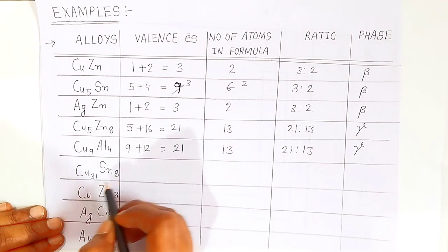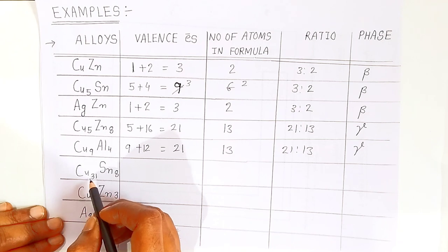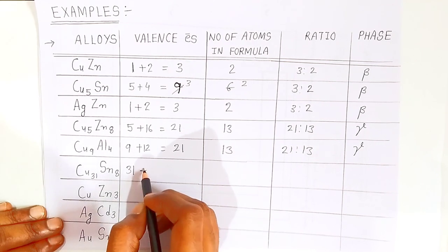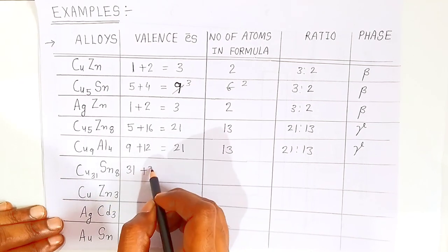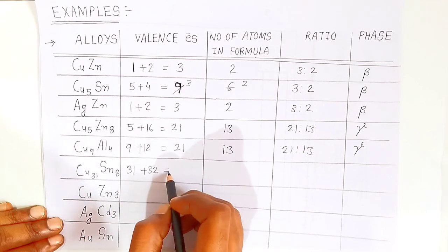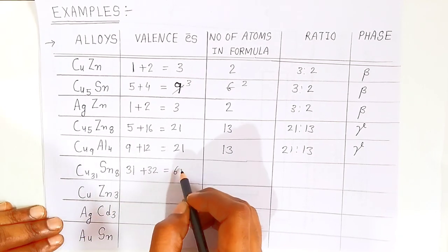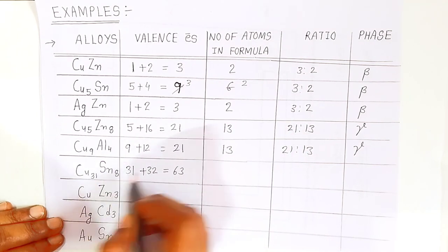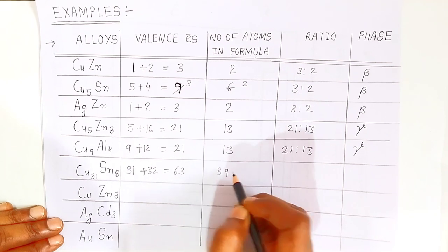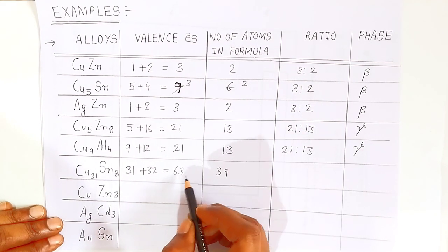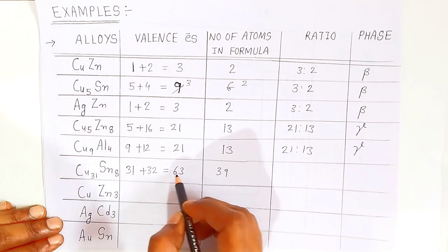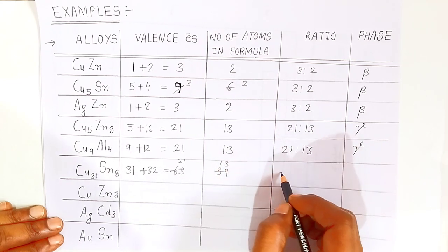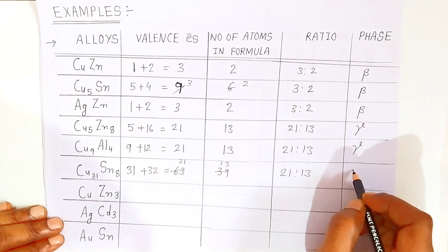For copper-stannous alloy with formula Cu₃₁Sn₈: valence electrons from copper give 31, and stannous gives 8×4=32, total 63. Total atoms: 31+8=39. The ratio 63/39 simplifies to 21/13 — again gamma phase.